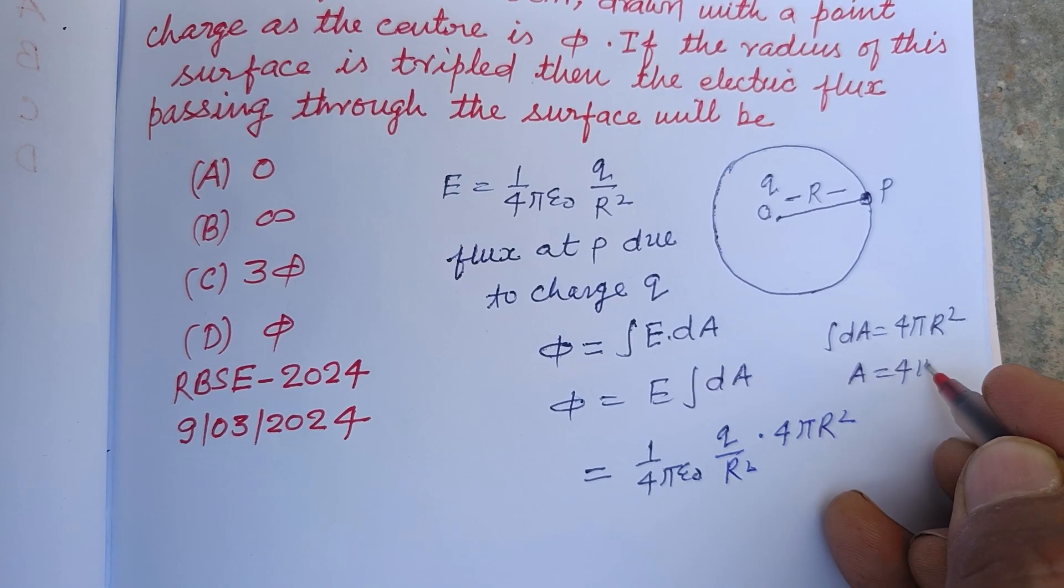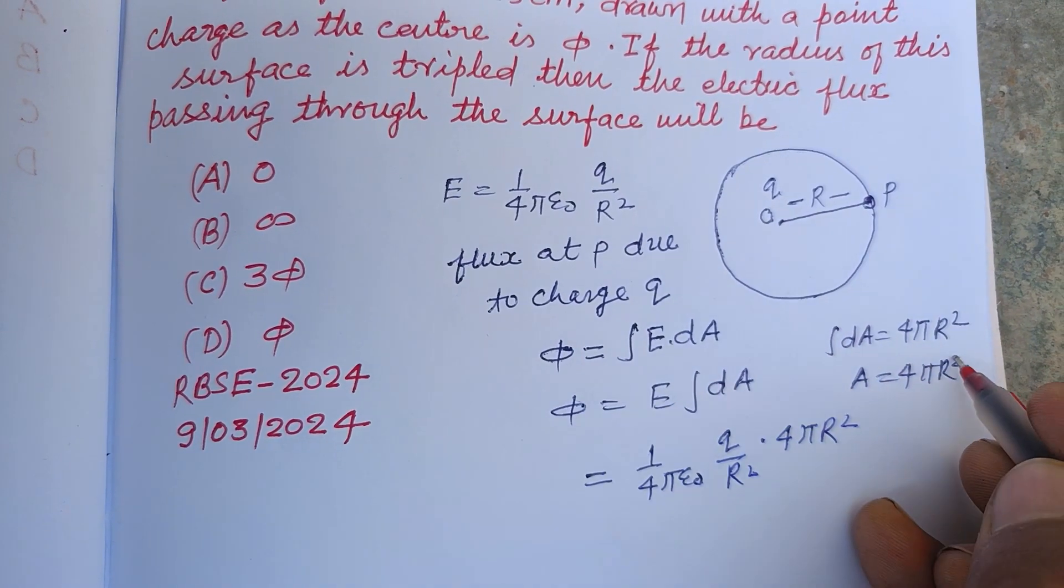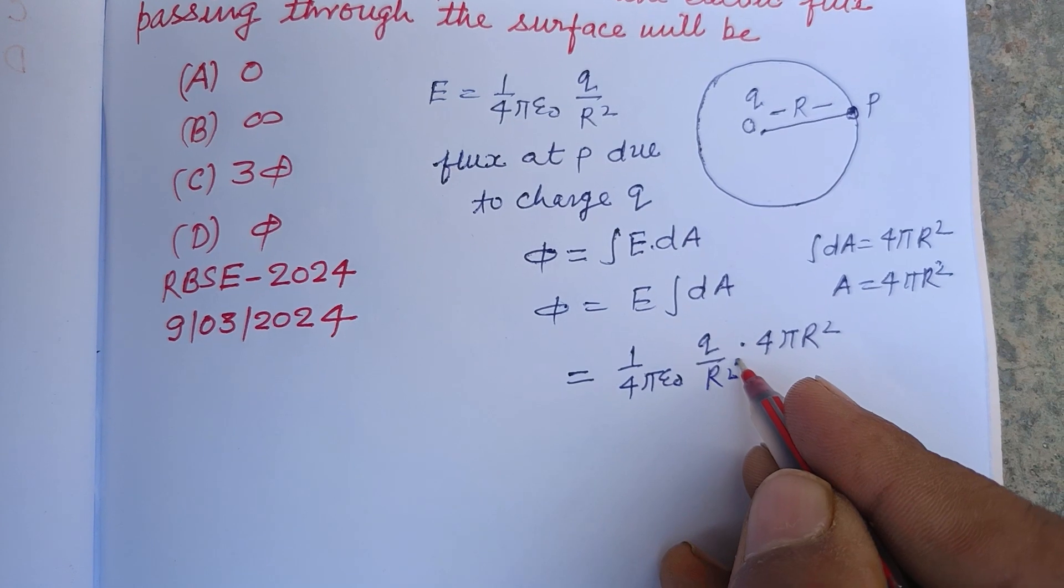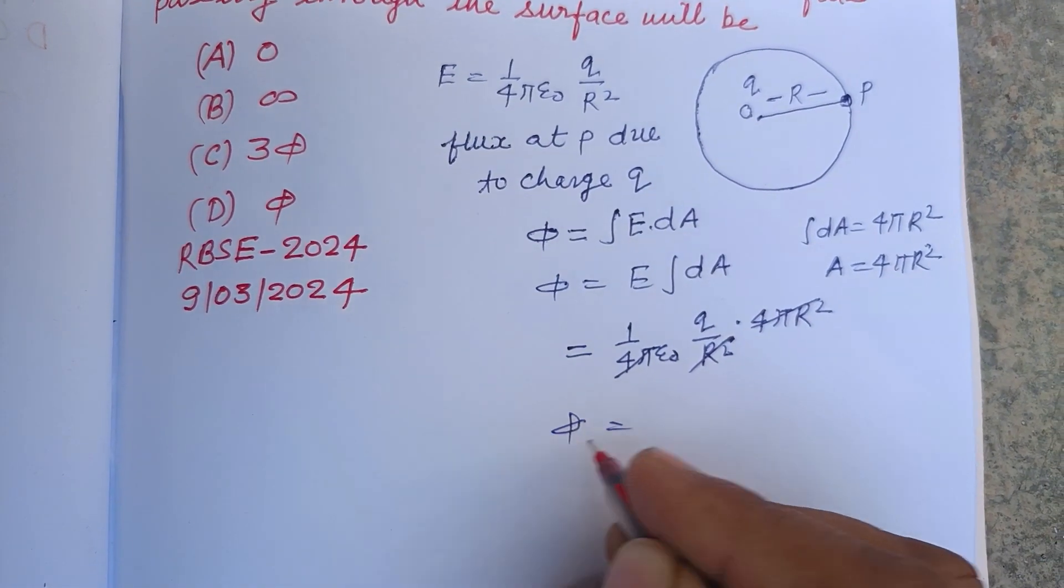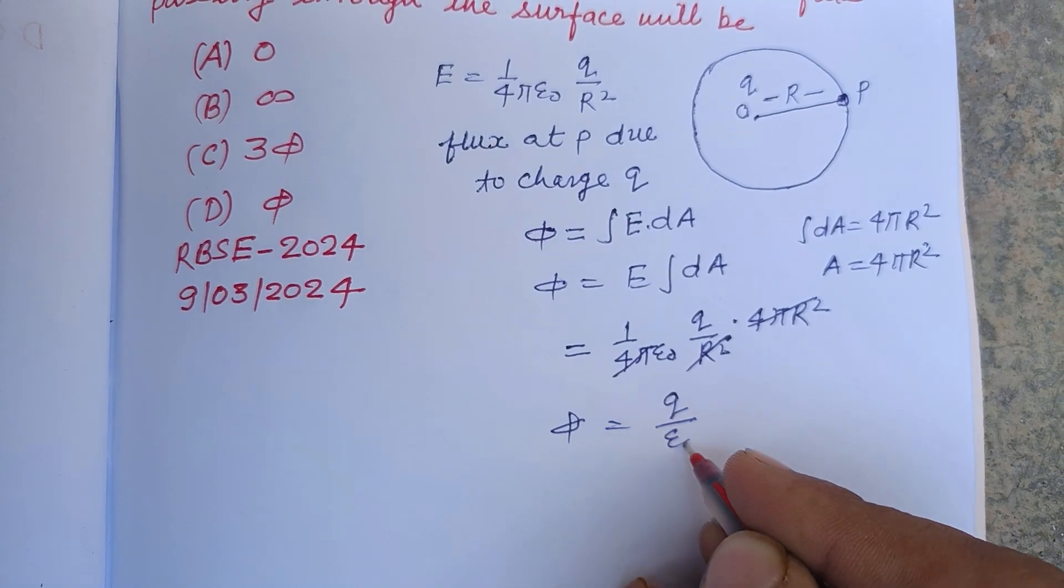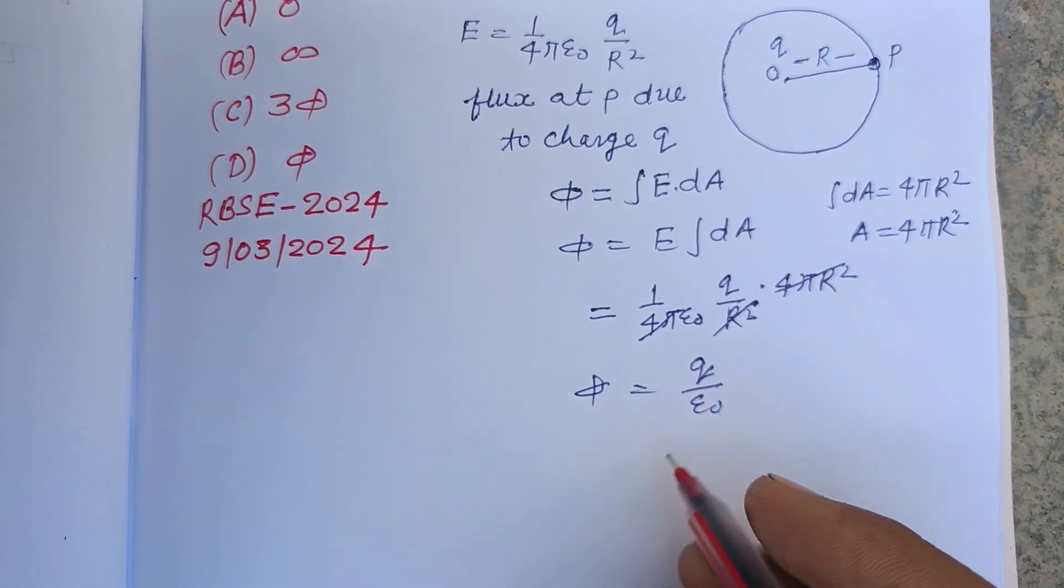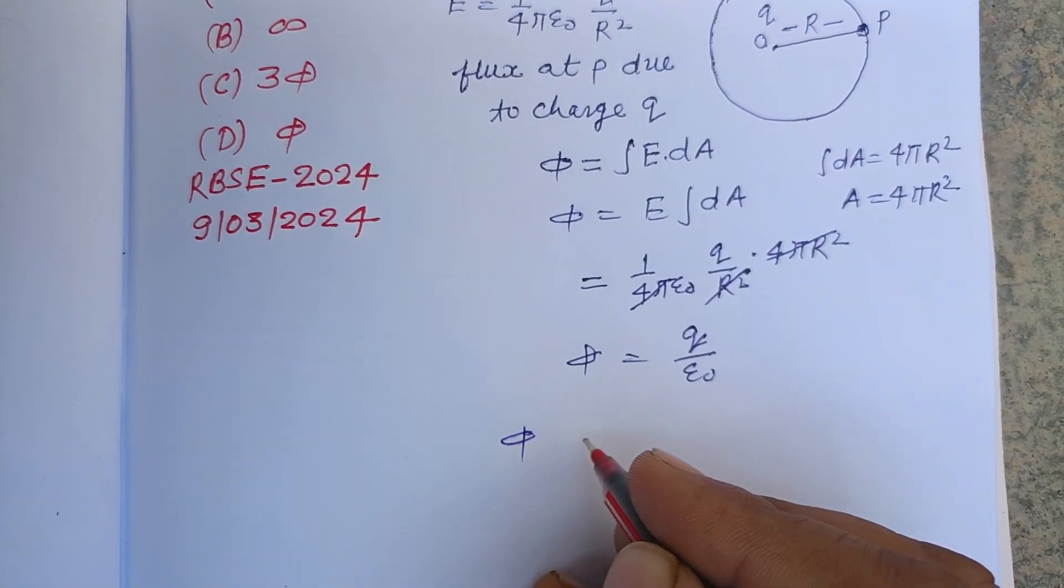Here 4πR² and R² cancel, we get φ = Q/ε₀. So here, flux φ does not depend on radius.